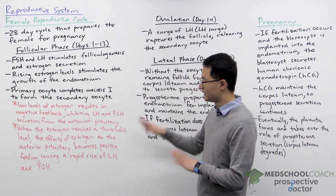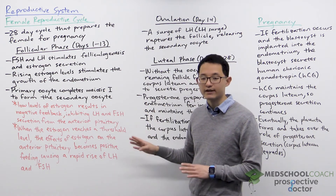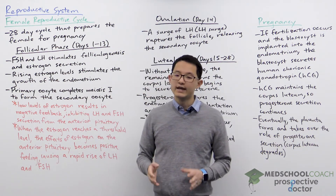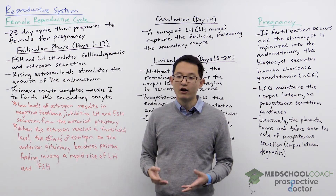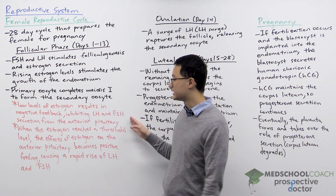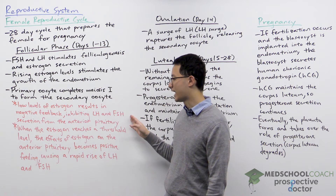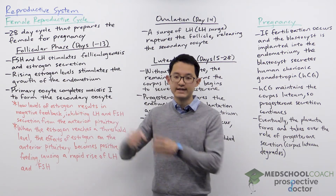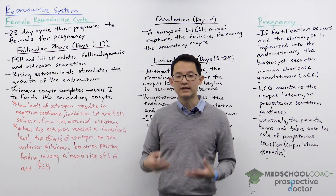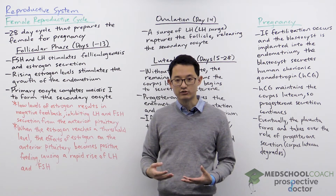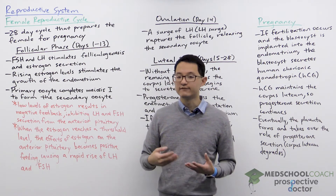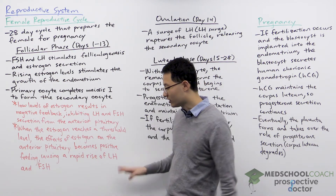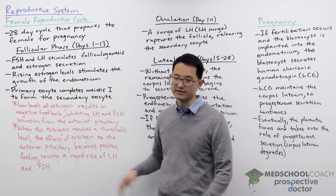The effects of estrogen change during the follicular phase. Initially, when the levels of estrogen are low, estrogen has a negative feedback effect on the anterior pituitary gland, resulting in an inhibition of LH and FSH secretion. However, as estrogen levels gradually rise and reach a threshold level, estrogen becomes a positive feedback stimulator of the anterior pituitary gland, causing a rapid rise in LH and FSH levels.